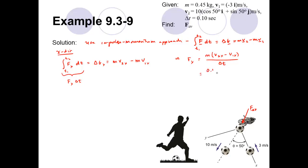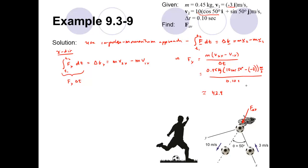Plugging in numbers: the mass is 0.45 kg; the x component of velocity after the kick is 10 cosine 50 degrees; the x velocity before the kick is minus 3, so we subtract negative 3, in meters per second; divided by 0.10 seconds. Punching that into the calculator, the x component of the average force works out to be approximately 42.4 newtons.